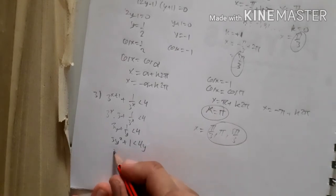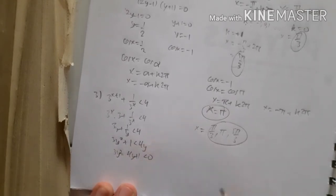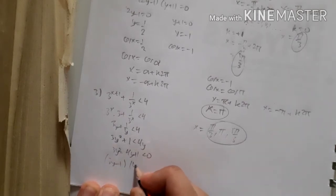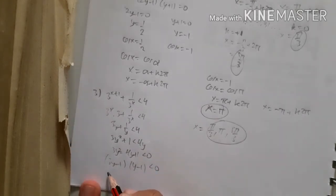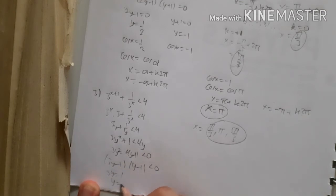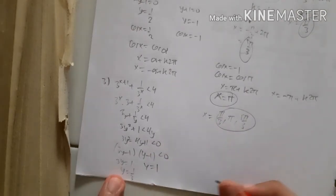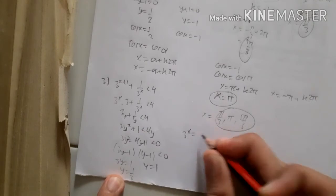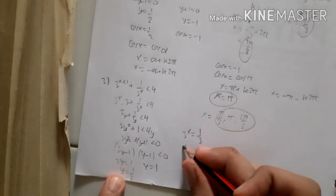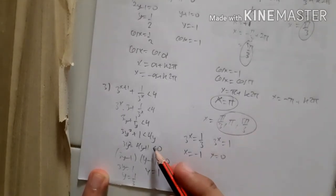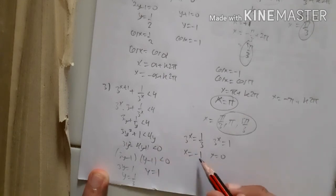Rearranging: 3y² − 4y + 1 < 0, which factors as (3y − 1)(y − 1) < 0. The critical values are y = 1/3 and y = 1. Since y = 3^x, we have 3^x = 1/3 giving x = −1, and 3^x = 1 giving x = 0.